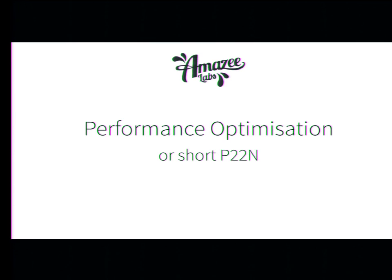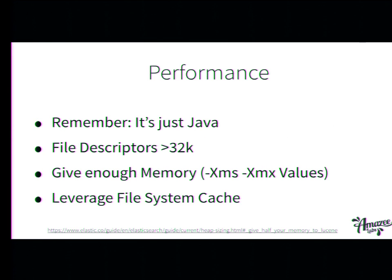Another topic I want to cover is performance optimization, short P22N. Remember, it's Java — Java needs memory, it needs I/O, and it needs files. Since we have a lot of files stored on disk, you need a lot of file descriptors to have them open. It can happen that when you say I want to have data from the last 60 days with a filter and you hit enter, your server just says it can't do that. So be sure that you raise the file descriptors.